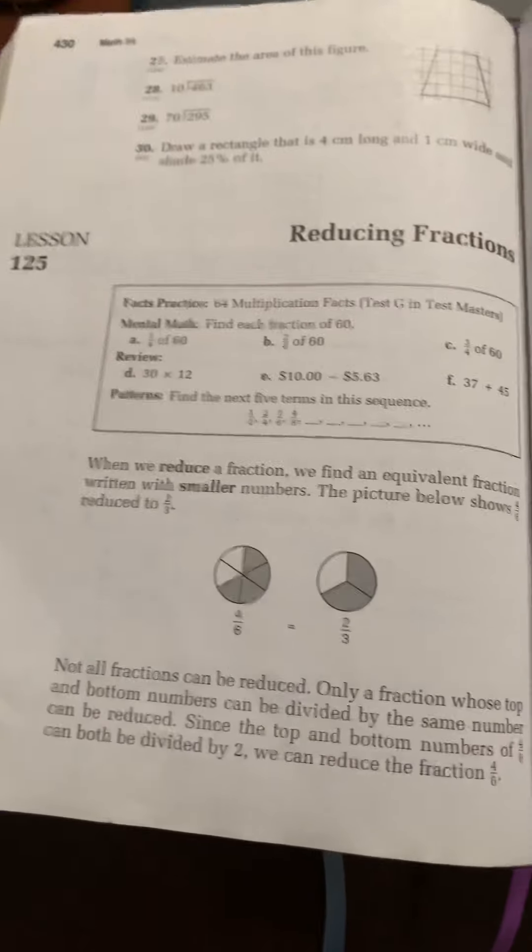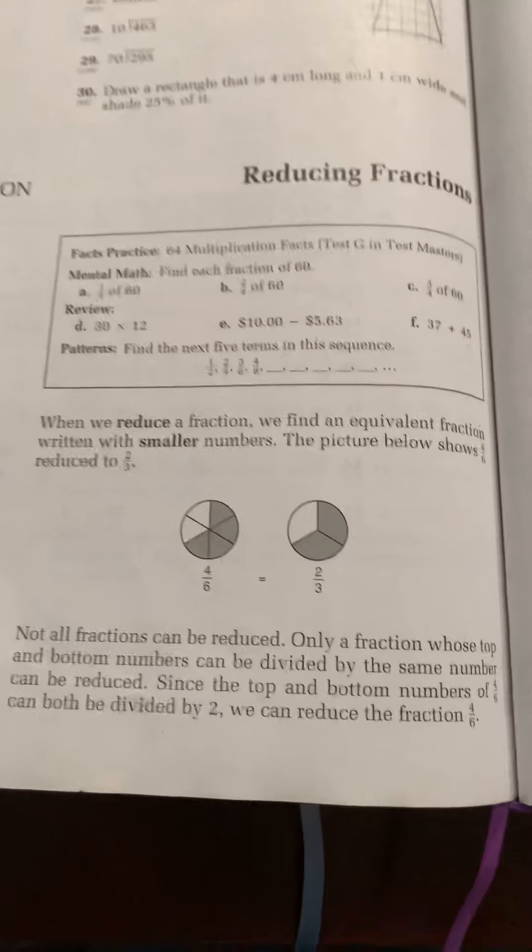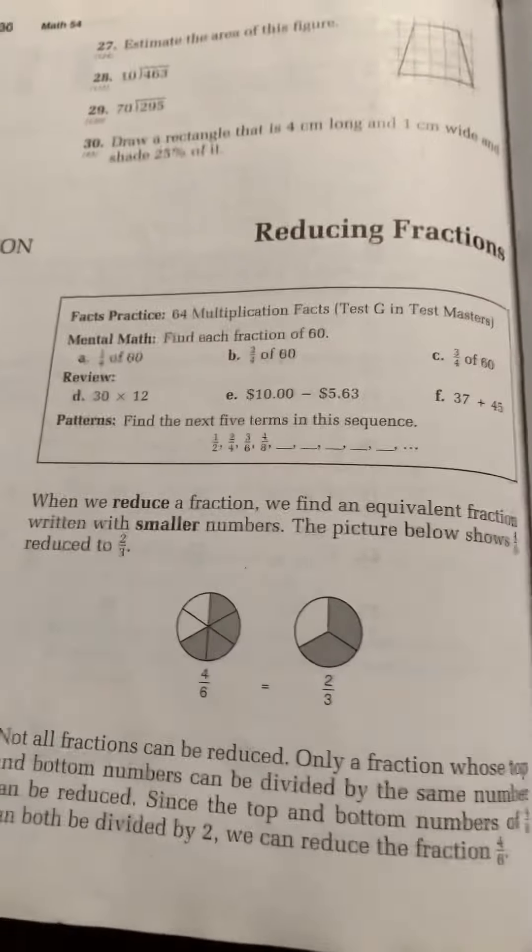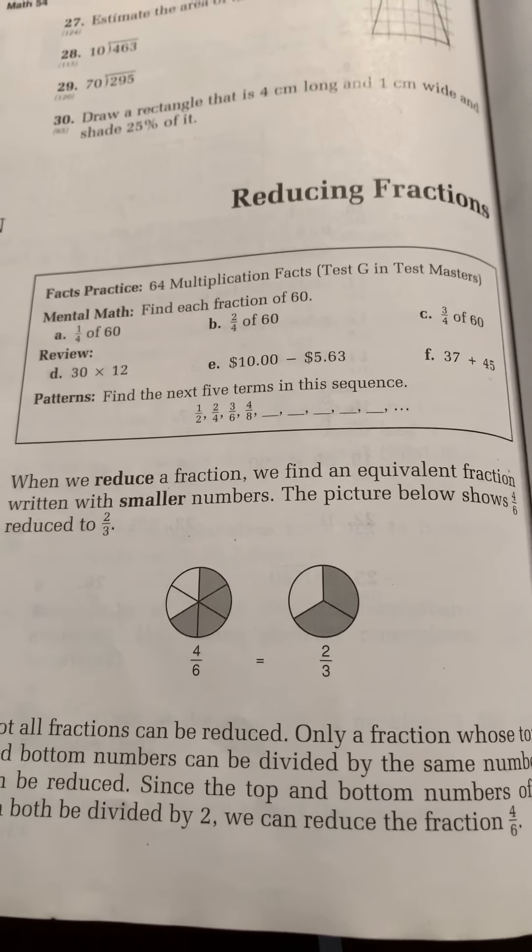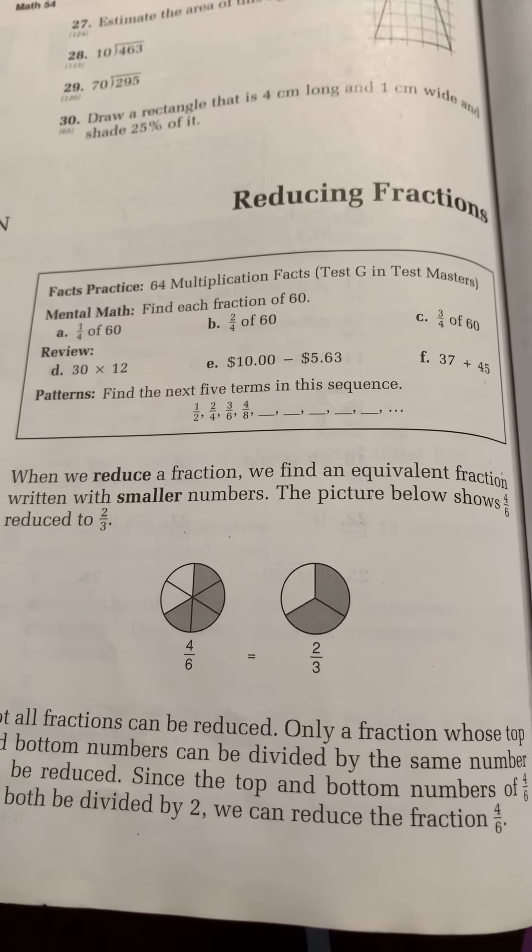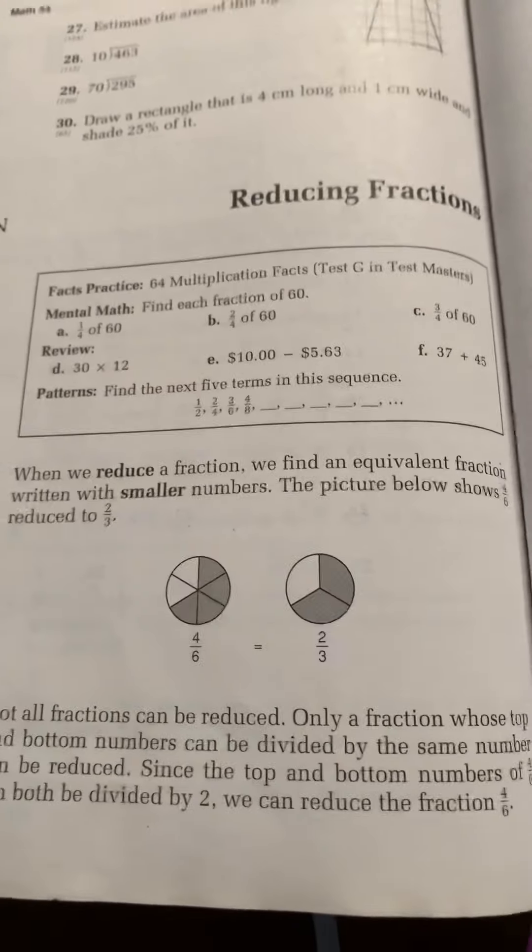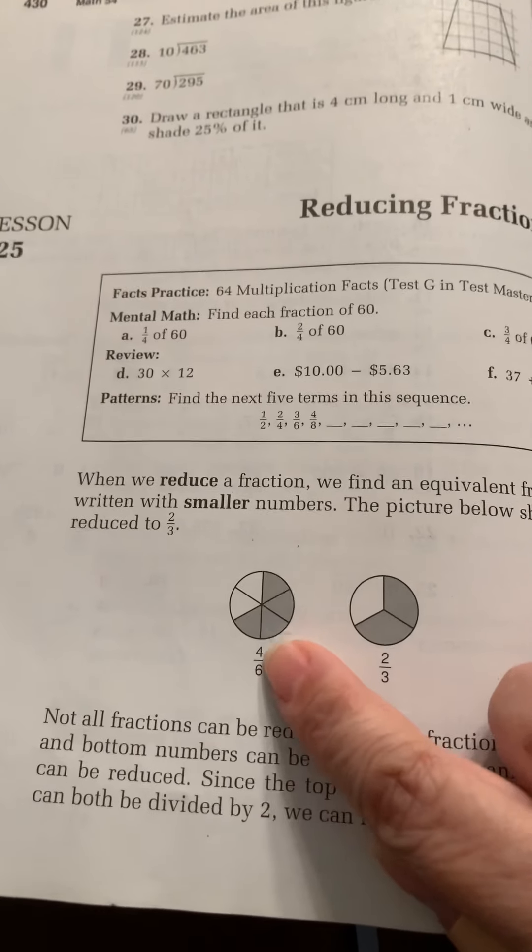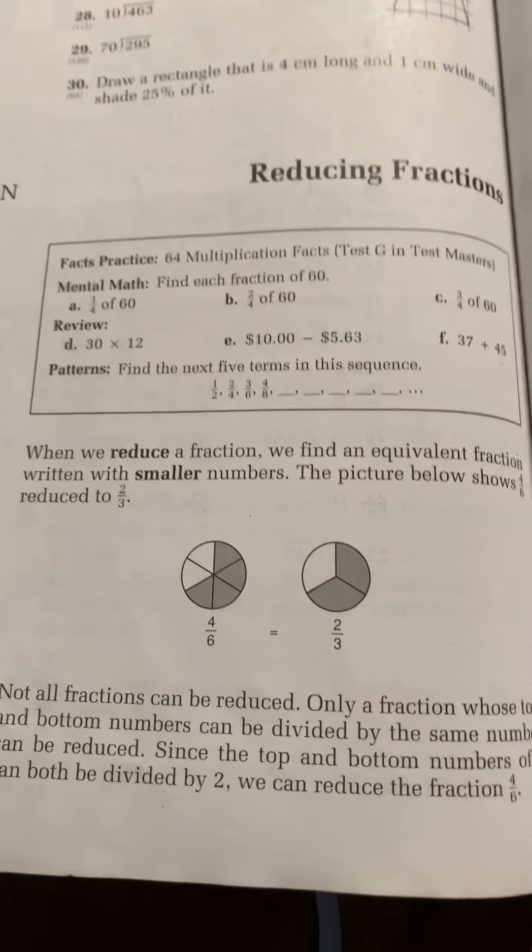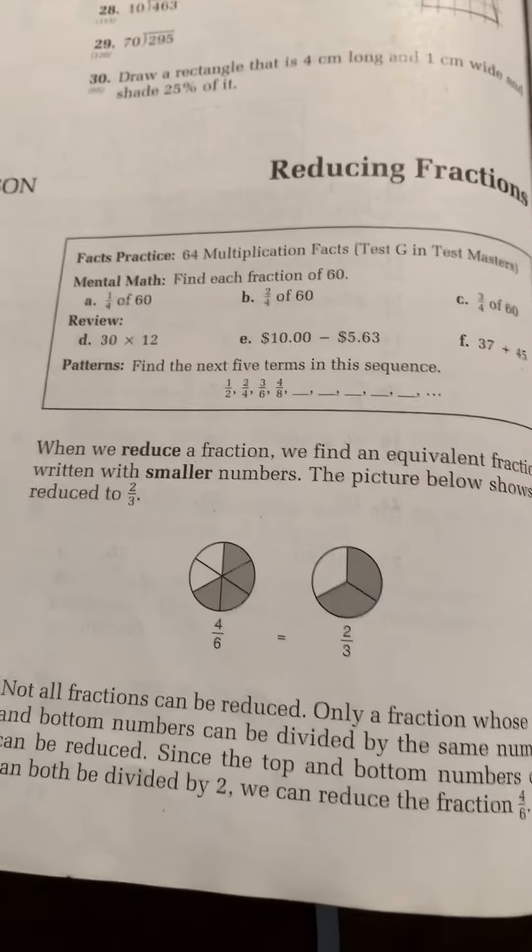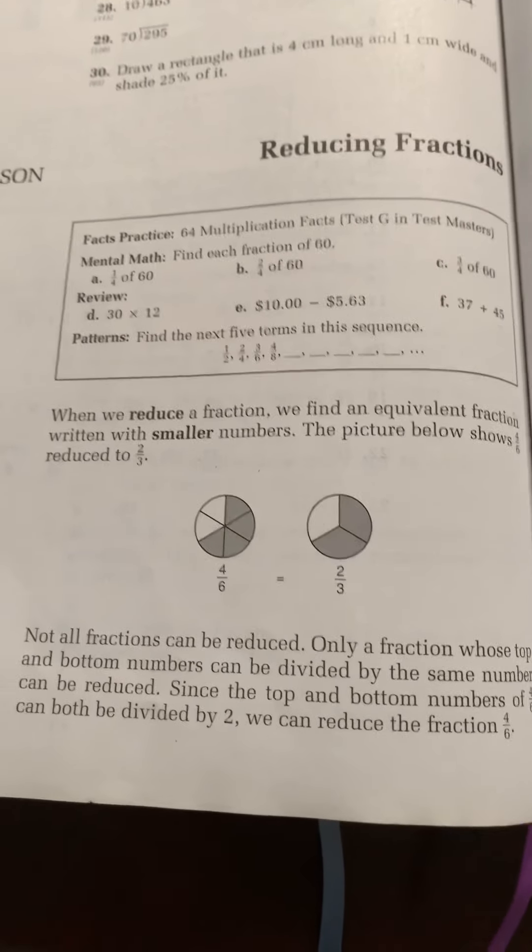And go to reducing fractions, lesson 125, which is on page 430 in your book. When we reduce a fraction, we find an equivalent fraction with smaller numbers. The picture below shows four-sixths reduced to two-thirds. So it's just showing you how to make this even simpler, getting the numbers down to the smallest number possible. This is where knowing prime and composite numbers is going to come in and help you.